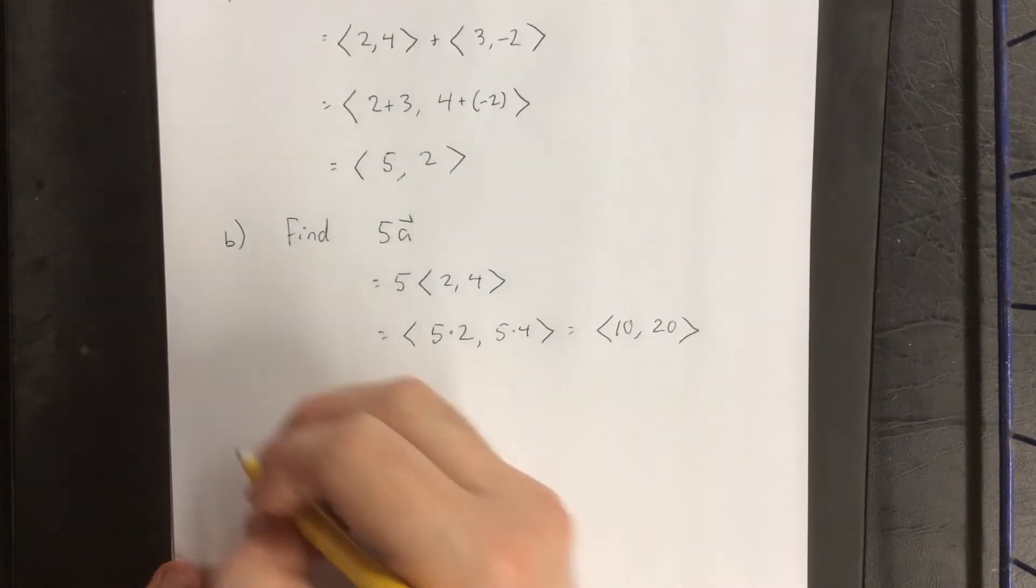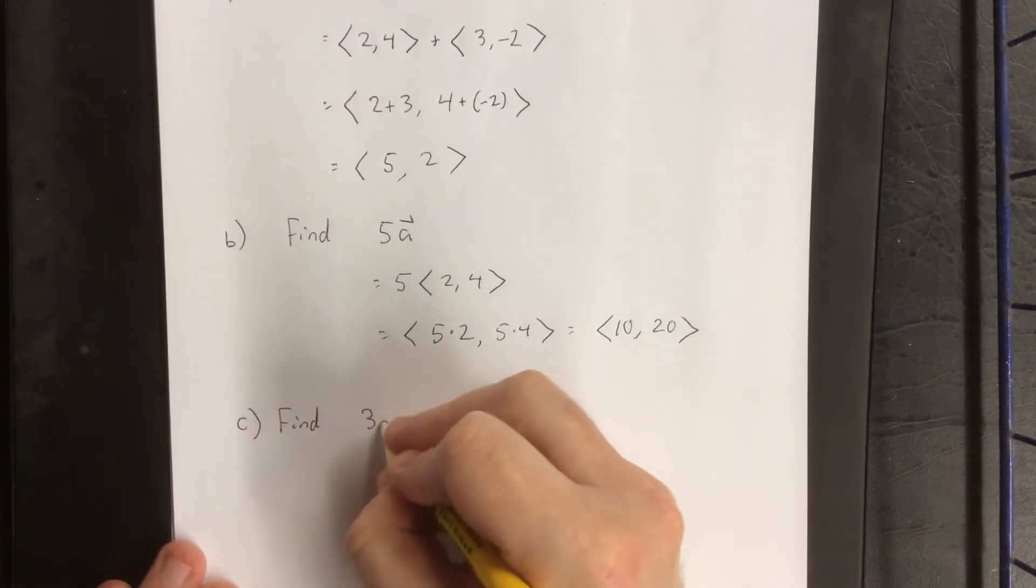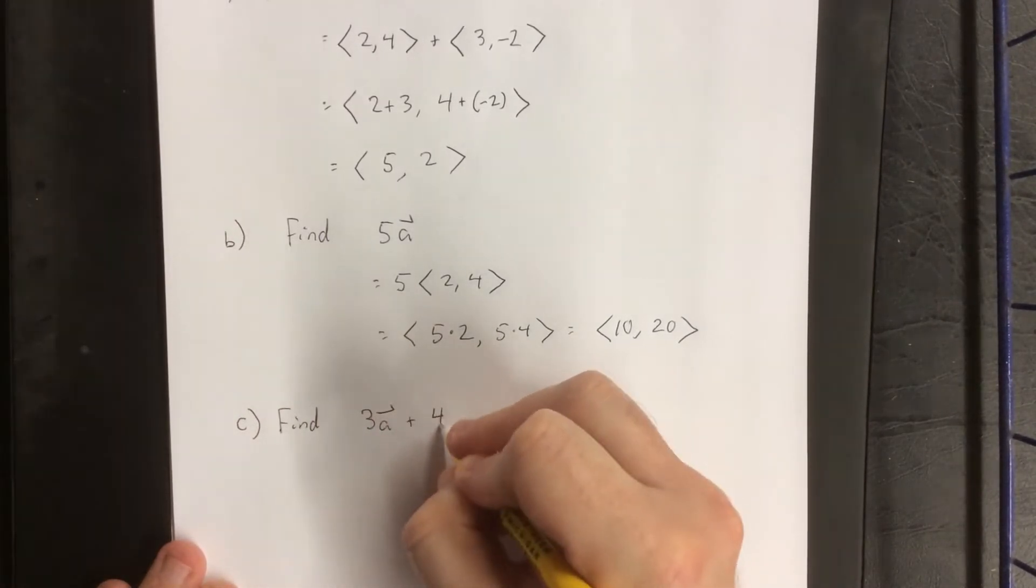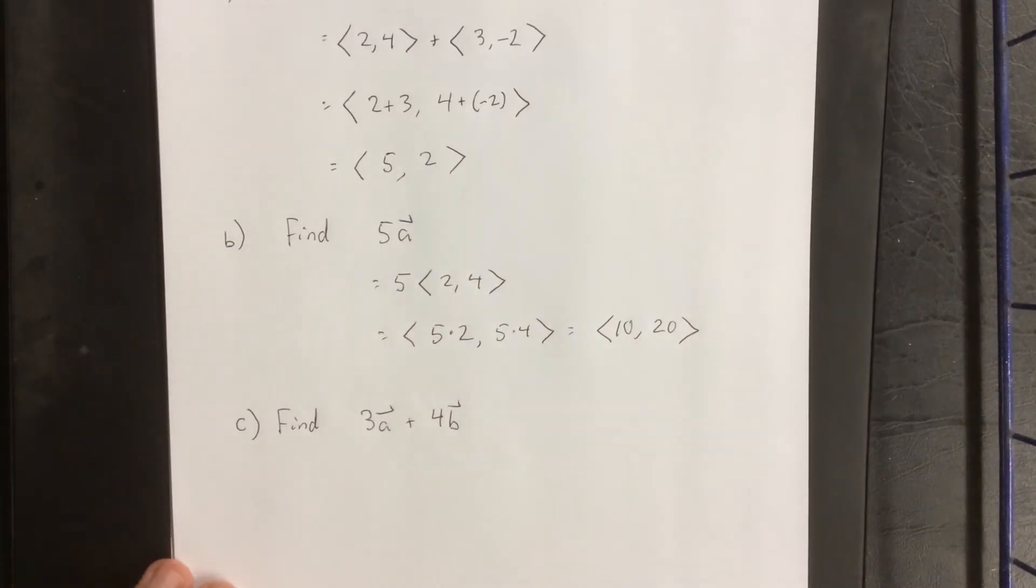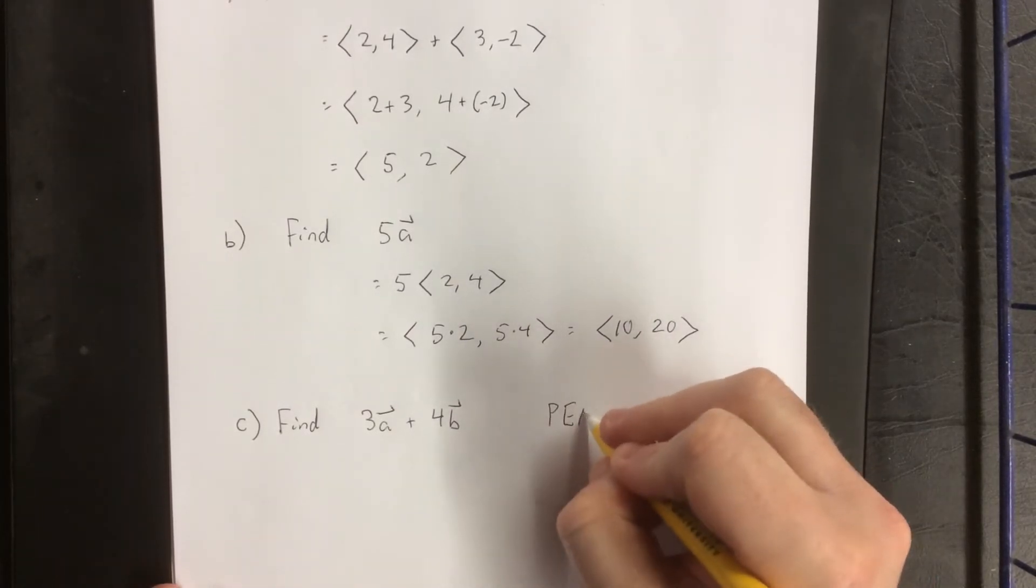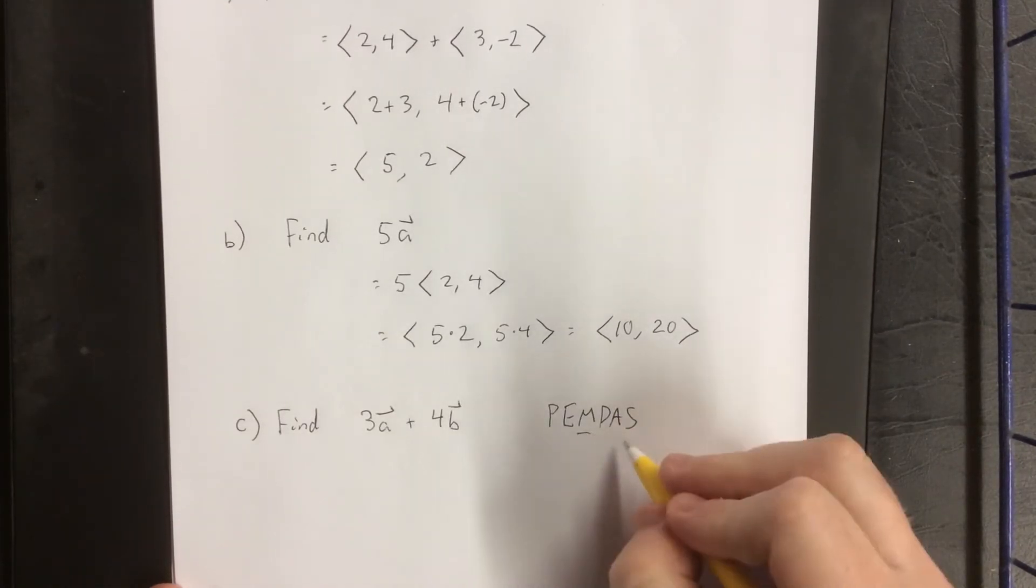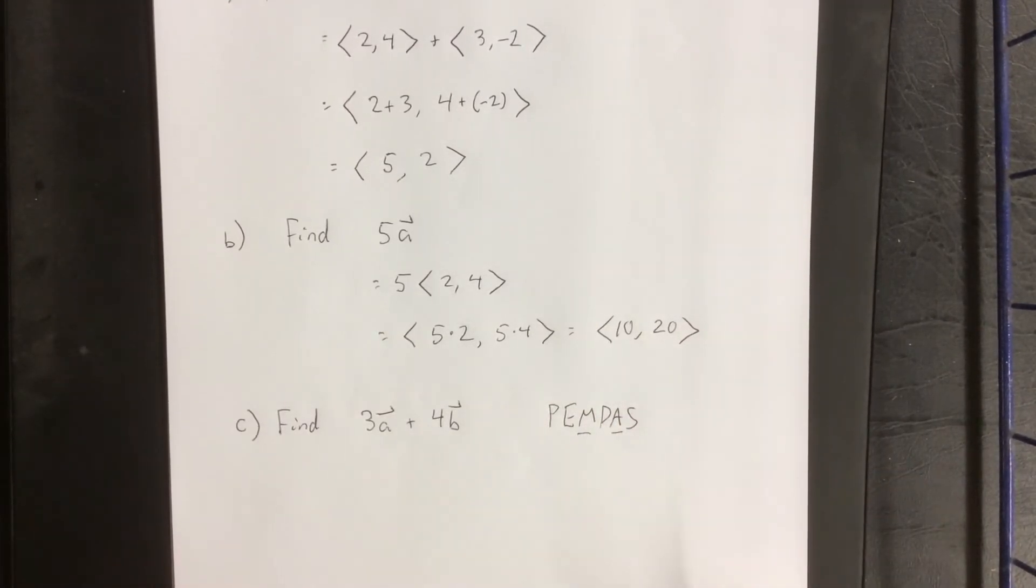And finally, I would like to find 3A plus 4B. Now in the event that you have vector addition as well as scalar multiplication, I remember that multiplication is going to come before addition or subtraction.